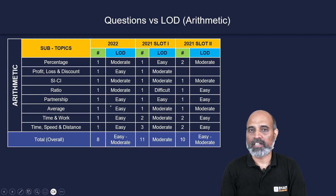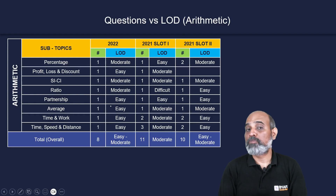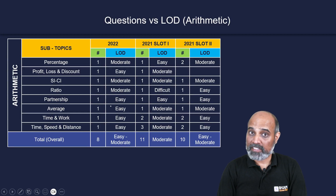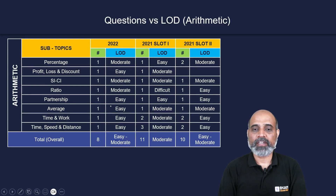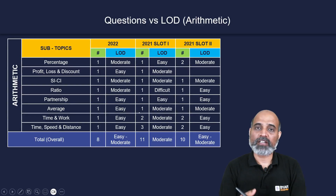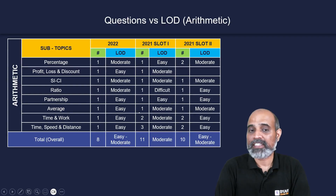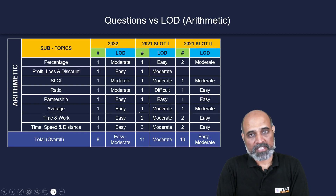In 2021 slot one, there were 11 arithmetic questions overall, and most were either moderate or difficult. The overall level was moderate. Ratio-based questions were difficult; time/speed/distance, time and work, and averages were moderate; profit/loss/discount and SI/CI were also moderate. Percentage questions were easy.